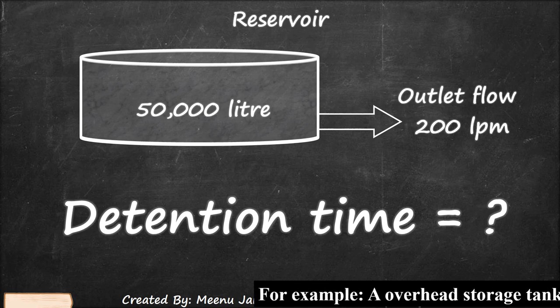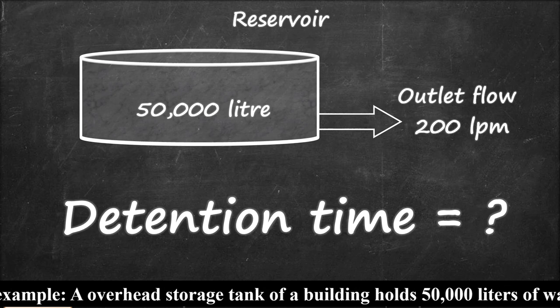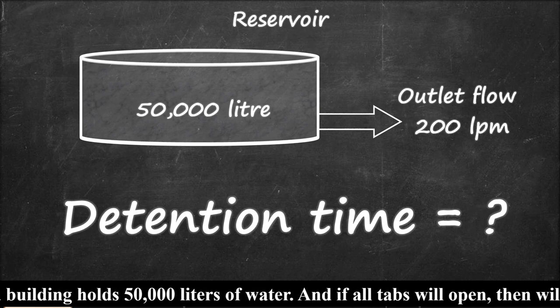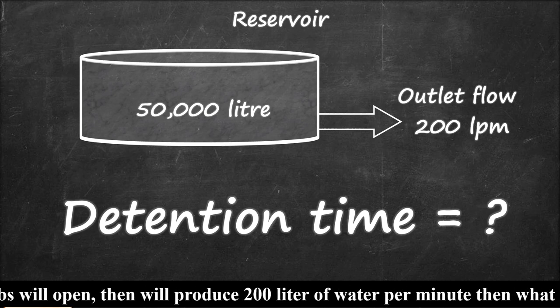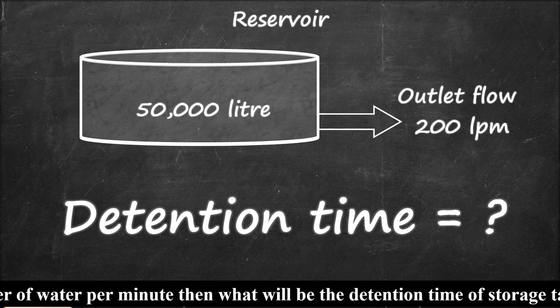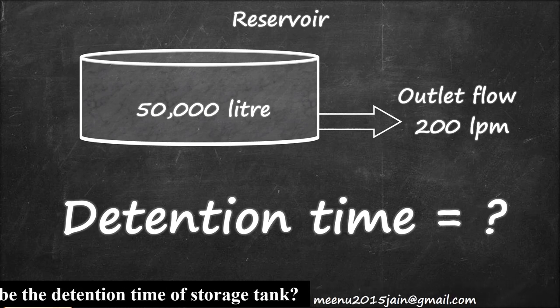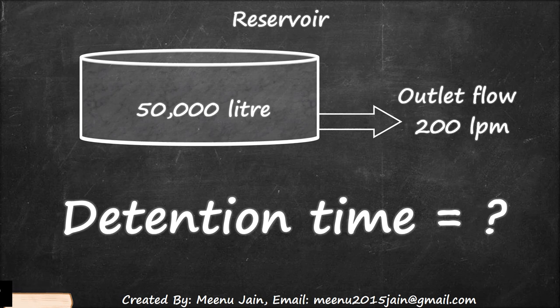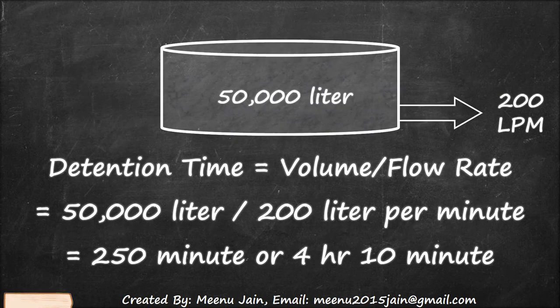For example, an overhead storage tank of a building holds 50,000 liters of water, and if all taps are open, it produces 200 liters of water per minute. What will be the detention time of this storage tank? The formula for detention time is volume divided by flow rate. Volume is 50,000 liters and flow rate is 200 liters per minute, so detention time equals 50,000 divided by 200, which gives 250 minutes, or 4 hours 10 minutes.